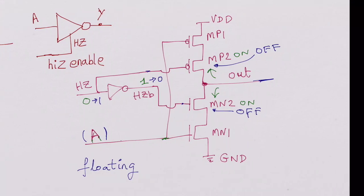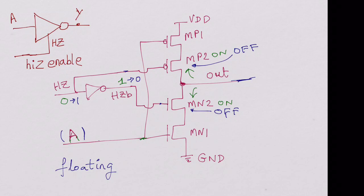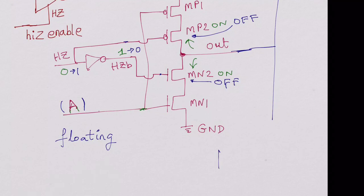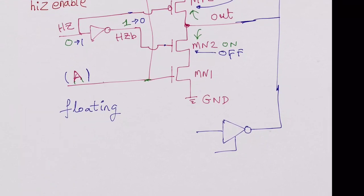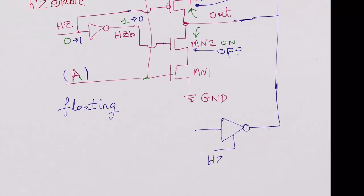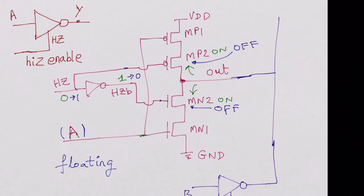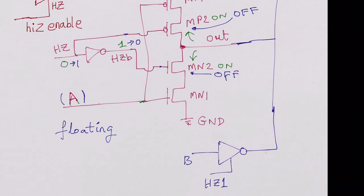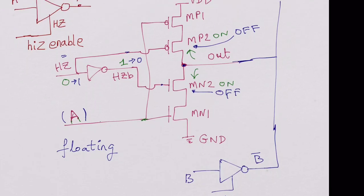Now in this case if you have this connected to a bus, for example, and this bus is driven by another tri-state inverter, it's driving this with HZ1. It's a different device with input B. So when HZ1 is high this output is tri-state or floating, but when HZ1 is low you will have B bar appear on the bus instead of A bar.